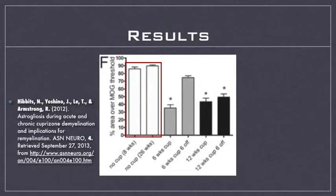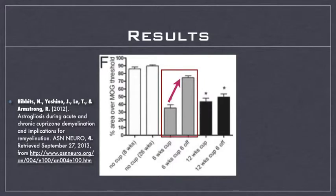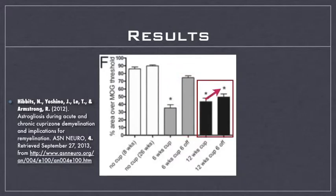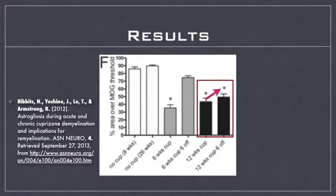Looking at the two middle bars, representing 8-week-old mice who were fed cuprazone for 6 weeks and then removed from cuprazone for 6 weeks, modeling acute demyelination, there is a significant increase in the area where MOG was expressed. This increase is also present in mice fed cuprazone for 12 weeks and then removed for another 12 weeks, modeling chronic demyelination, but to a lesser extent. This strongly supports remyelination occurring during the time frame, as MOG expression area increases after cuprazone is removed.